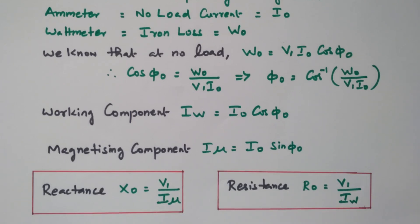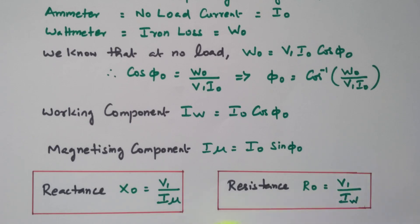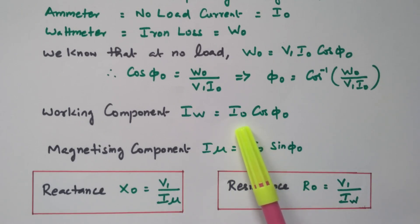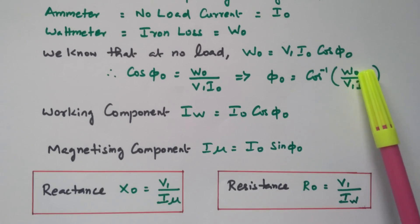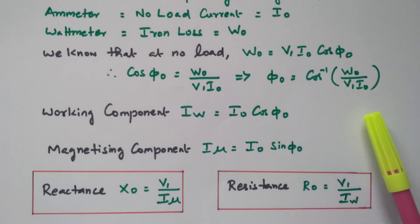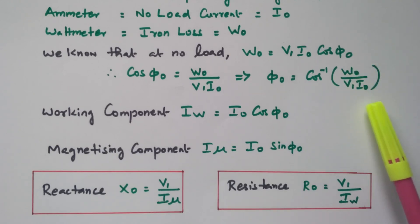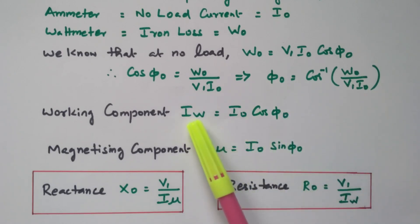In summary, the open circuit test gives us X₀ and R₀. The rated voltage V1 is read by the voltmeter. Iw and Iμ are calculated from the formulas using I₀ — the no load current from the ammeter — and φ₀, which is calculated from W₀ (wattmeter reading), V1, and I₀. W₀ is the power input to the primary winding, representing only the iron loss since copper loss is negligible. From the wattmeter, voltmeter, and ammeter readings we calculate φ₀, then Iw and Iμ, then X₀ and R₀.